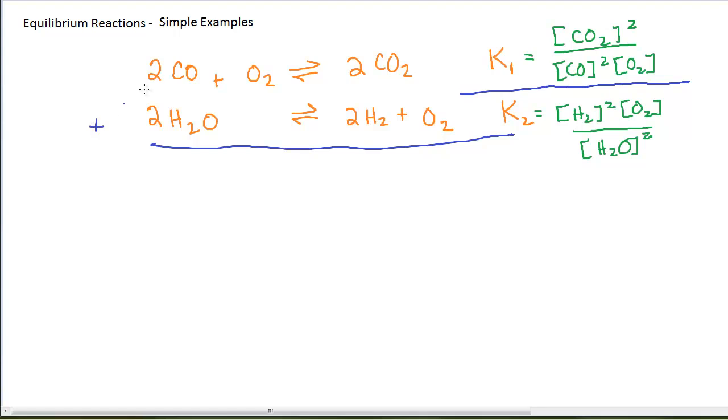But if I were to add these two reactions together, first of all, the O2 would cancel, so I'd be left with 2CO plus 2H2O is in equilibrium with 2CO2 plus 2H2. The new equilibrium constant for this final reaction would have this formula.